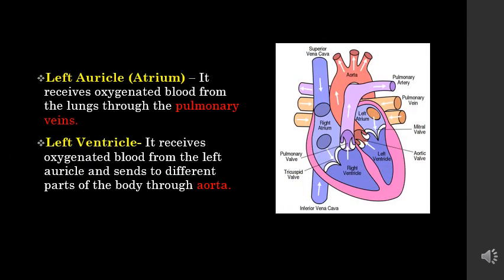The left auricle or atrium receives oxygenated blood from the lungs through the pulmonary veins. The left ventricle receives oxygenated blood from the left auricle and sends it to different parts of the body through the aorta. The pulmonary veins are attached to the left atrium and the aorta is attached to the left ventricle.